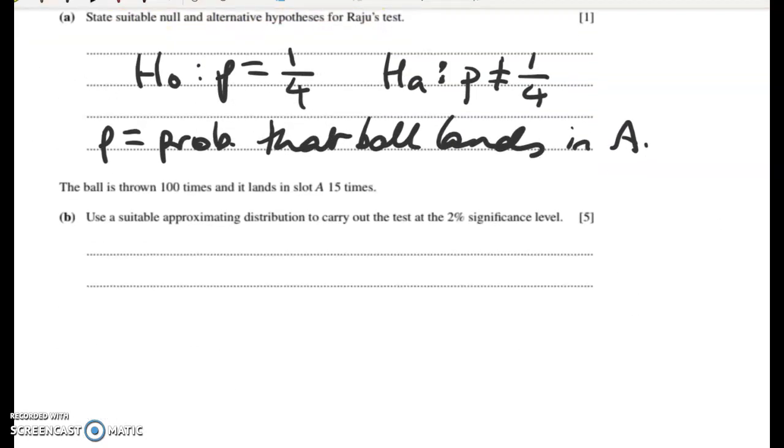Okay, so next, the ball is thrown 100 times and it lands in slot A 15 times. Now we could do a binomial test on this, but it would take us ages. So what we'd be looking to do if we were using the binomial distribution would be to find the probability that if H0 is true, what are the chances that we get X of 15 or something even weirder? So on average, if it's one quarter probability for each slot, we would be getting 25, right? So 15 is at the low end. So we're saying, what are the chances of getting X 15 or lower?